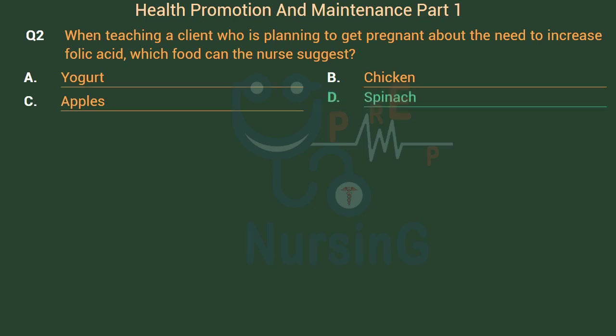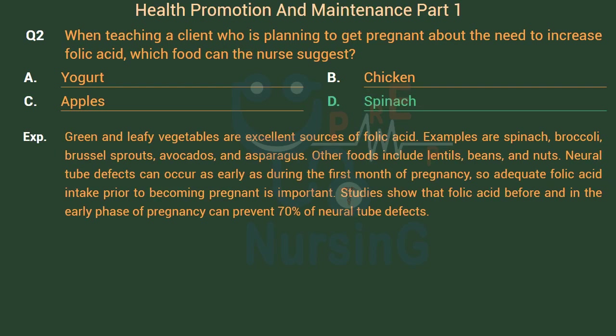The right answer is Option D: Spinach. Green and leafy vegetables are excellent sources of folic acid. Examples are spinach, broccoli, Brussels sprouts, avocados, and asparagus.